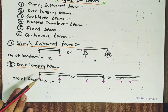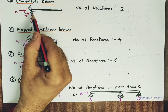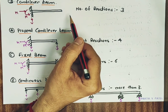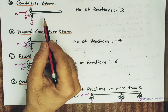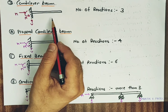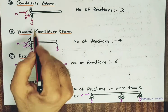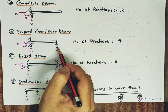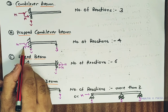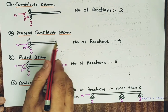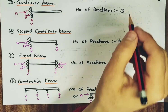A cantilever beam is one that is rigidly fixed at one end while there is no support at the other end. The number of reactions is 3 — from the fixed support: horizontal, vertical, and moment. This type of beam is used in galleries or balconies. A propped cantilever beam is the same as a cantilever beam but with one additional support at the free end, added to avoid deflection. The number of reactions becomes 4: horizontal, vertical, and moment at the fixed end, plus one vertical reaction at the propped end.